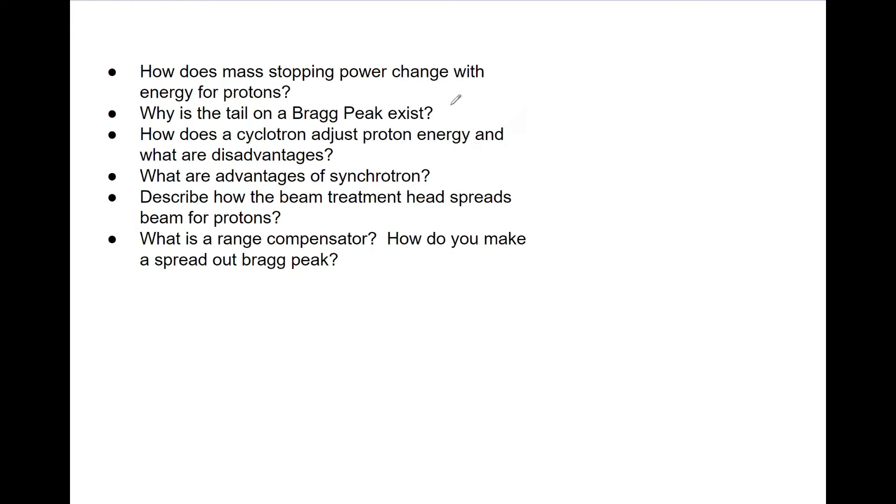So you really need to brush up on how they're used and the theory. How does mass stopping power change with energy for protons? Why is there a tail on a Bragg peak? How does a cyclotron adjust proton energy and what are its advantages? What are the advantages of a synchrotron? Describe how the beam treatment head spreads beams for protons. What is a range compensator and how do you make a spread out Bragg peak?